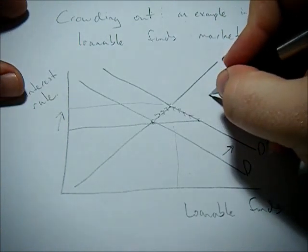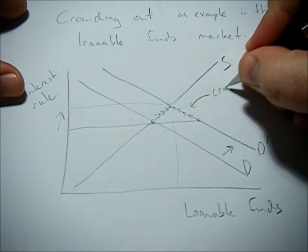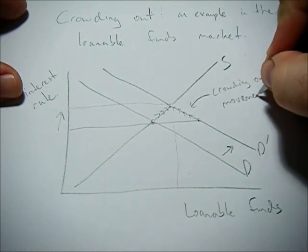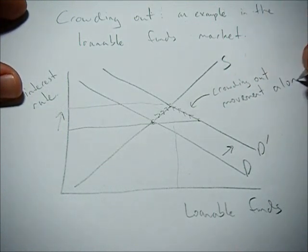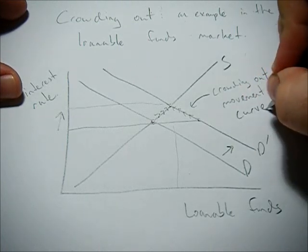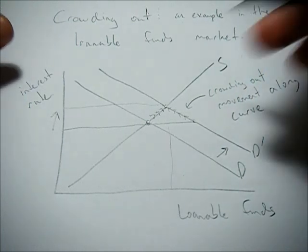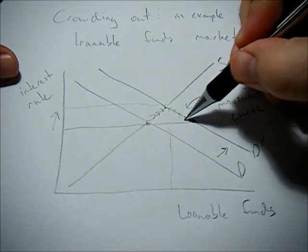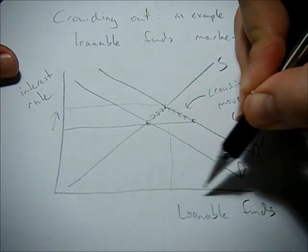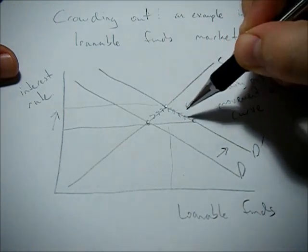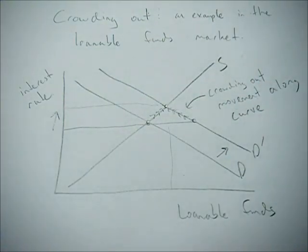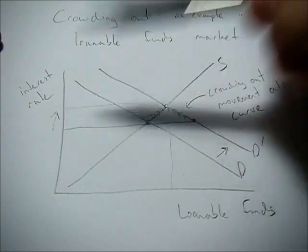Now the crowding out is actually this movement along the demand curve. Crowding out isn't a shift in demand. It's these firms and consumers actually lowering the quantity of loanable funds they desire because that interest rate is going up trying to get into equilibrium again.